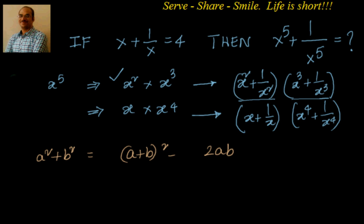If you substitute in our particular problem, we have a equal to x and b equal to 1 by x. So x square plus 1 by x square is equal to x plus 1 by x whole square minus 2 into x into 1 by x, which is nothing but equal to 4 square minus 2, which is equal to 14.